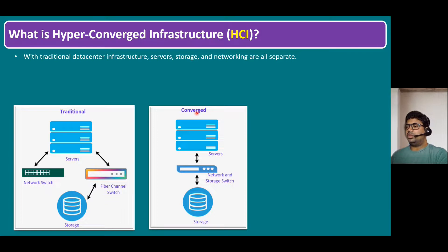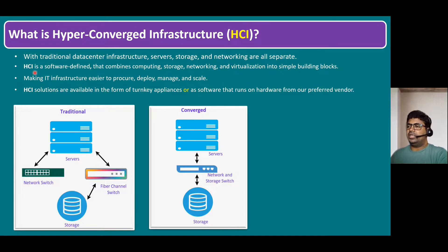Later on, we have a concept called hyper-converged infrastructure. That means the same converged infrastructure but using a hypervisor. That hypervisor can be from any principal vendor — VMware has ESXi, Nutanix has Acropolis, and Microsoft has Hyper-V. HCI is a software-defined solution that combines computing, storage, networking, and virtualization into simple building blocks, making IT infrastructure easier to procure, deploy, manage, and scale.